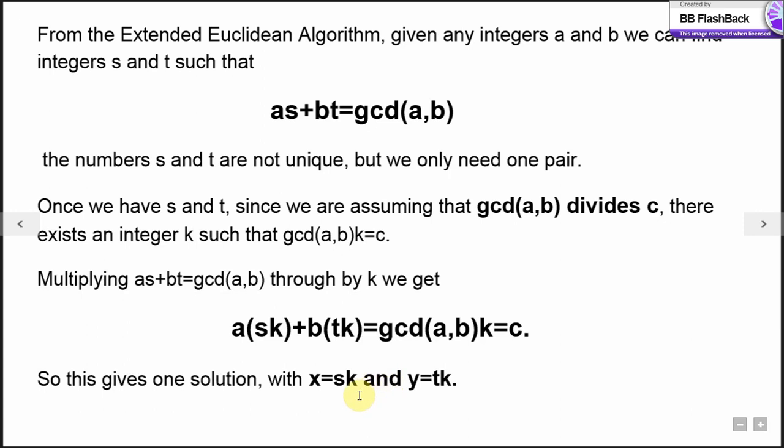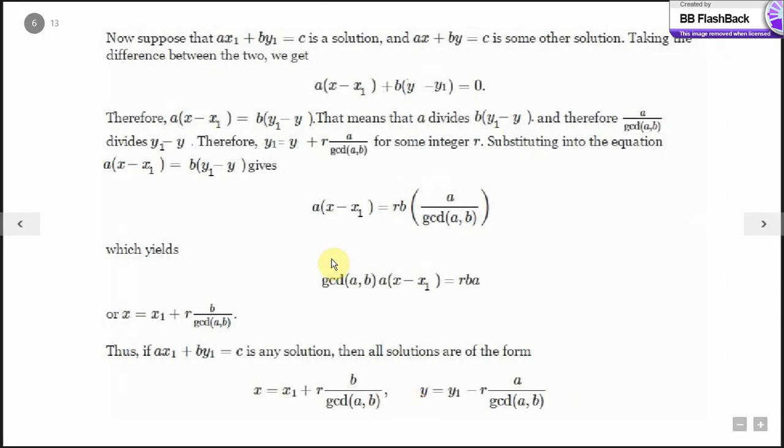As I said, once you have one solution, we can derive infinitely many. How do we derive the infinite solutions? Suppose we have equation ax1 plus by1 equal to c, which is a solution, and another which is ax plus by equal to c, which is also a solution. Taking the difference between the two, we get a into x minus x1 plus b into y minus y1 equals 0.